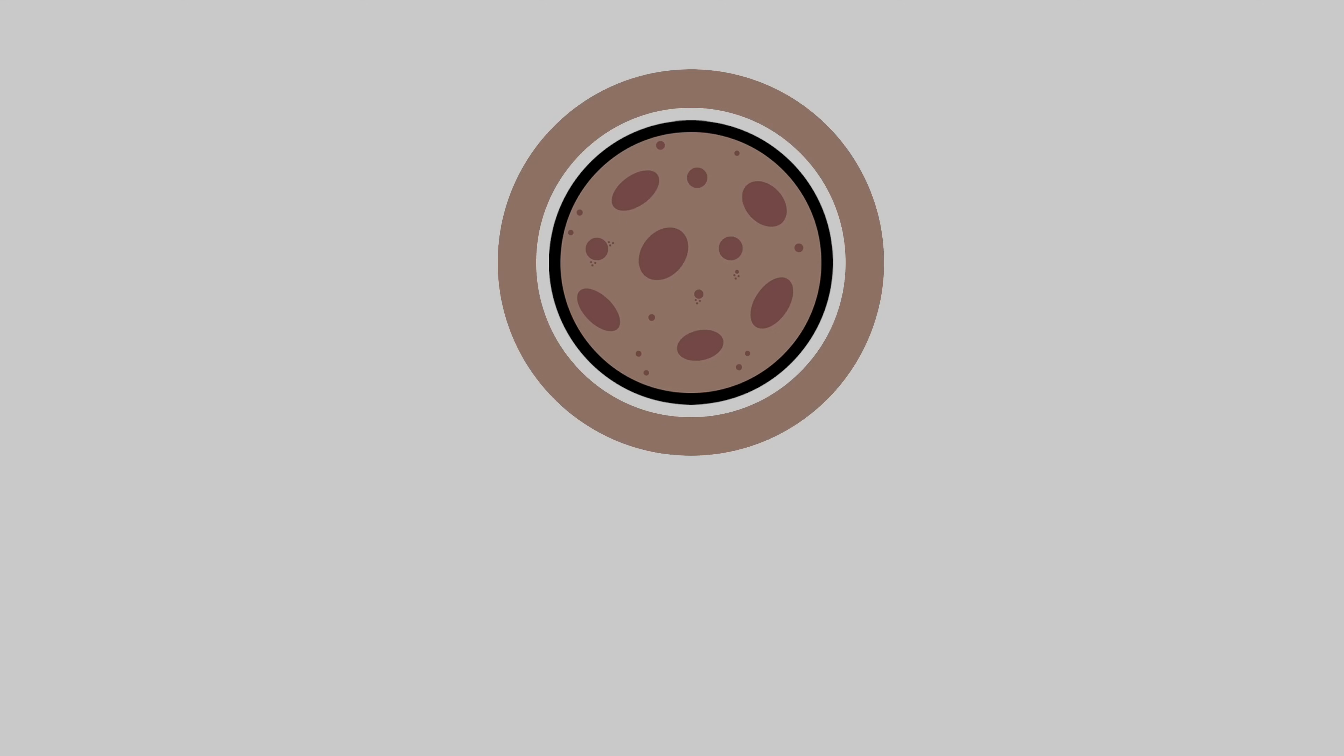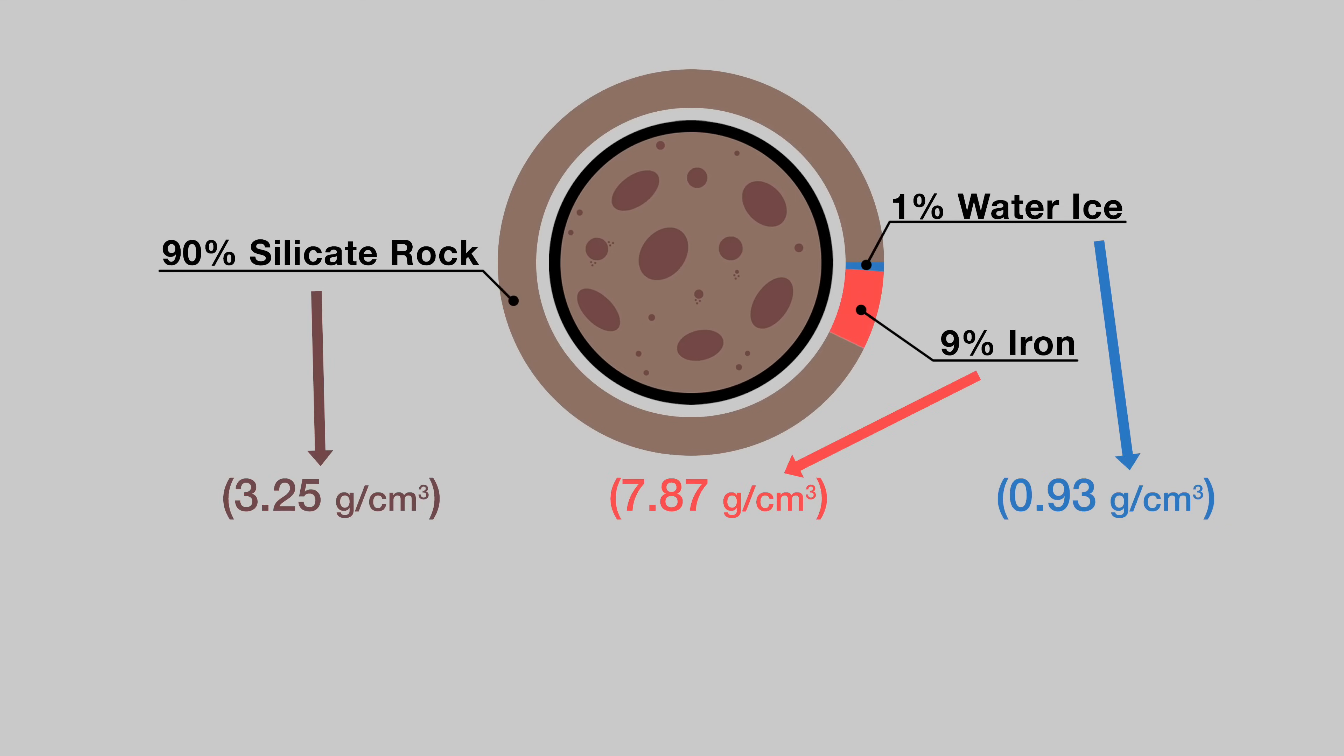We know it needs to be predominantly rocky, so let's say it's comprised of 90% silicate rock, 10% iron, and 1% water ice. Simply multiply the density of each material by the percentage you choose to get the overall density of your moon. In this case we're looking at a density of about 3.72 grams per centimeter cubed, aka 0.68 times the density of Earth.